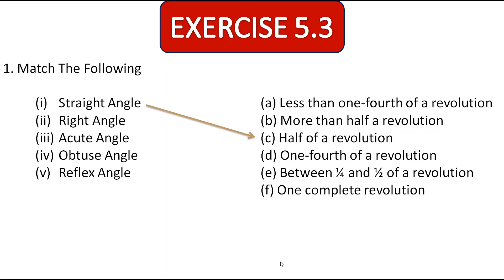Next, second one is right angle. See here, D one is one-fourth of a revolution. One-fourth means 90 degrees. So we can say right angle can be matched with one-fourth of a revolution. Next is acute angle. Acute angle is less than 90 degrees. So here, less than one-fourth of a revolution means less than 90 degrees. So we can match acute angle to A option.